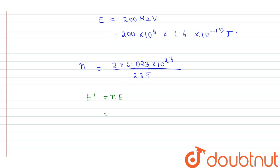the value of number of atoms in 2 gram uranium is 2 into 6.023 into 10 power 23 divided by 235